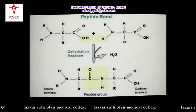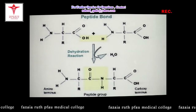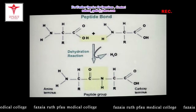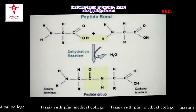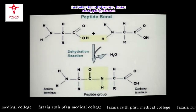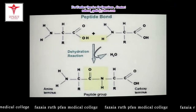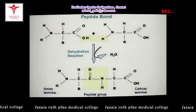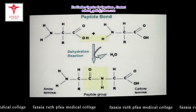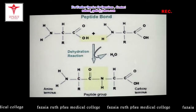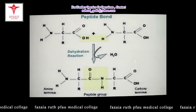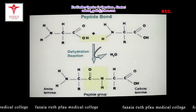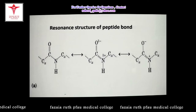This covalent bond formed is called the peptide bond. The alpha carbon of one amino acid residue and the alpha carbon of the second amino acid residue, together with the peptide bond itself, form what is called the peptide group. This peptide group is actually a polar group.